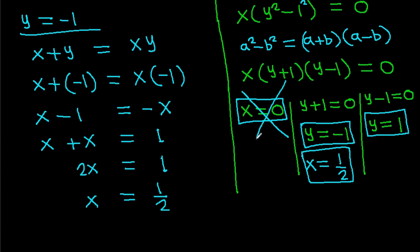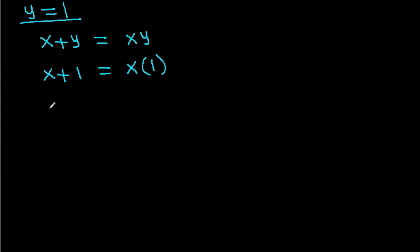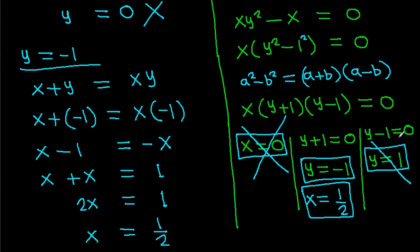We know x is not equal to 0. Now, if y equals 1, substituting into the first equation: x plus 1 equals x times 1, so x plus 1 equals x. The x terms cancel, leaving 1 equals 0, which is not possible. Therefore, y cannot equal 1.